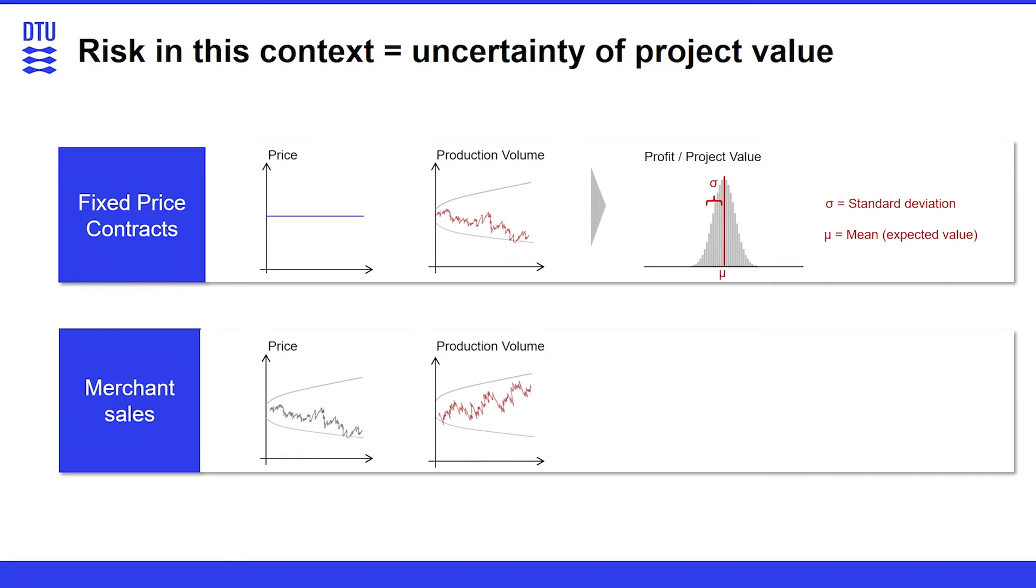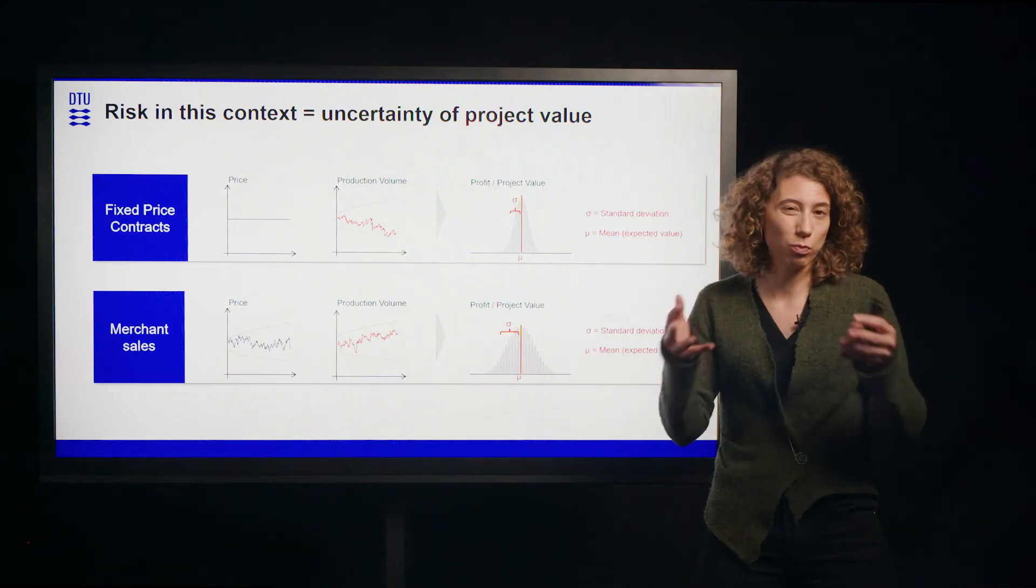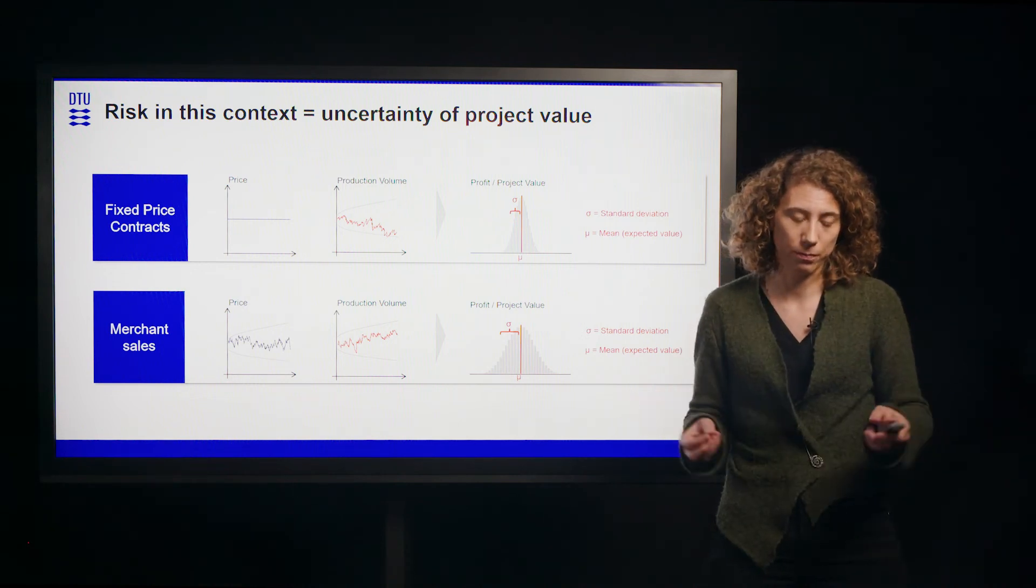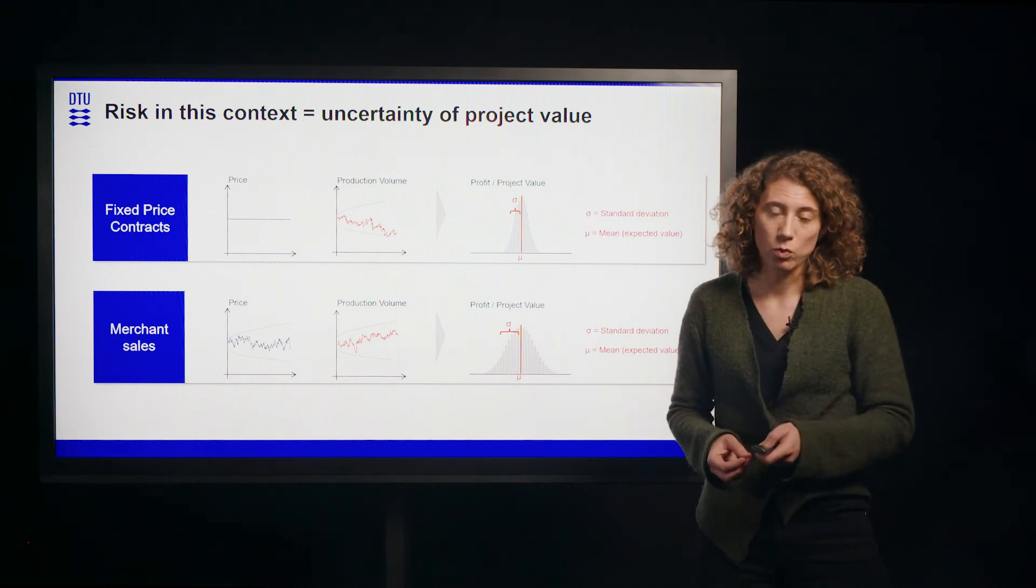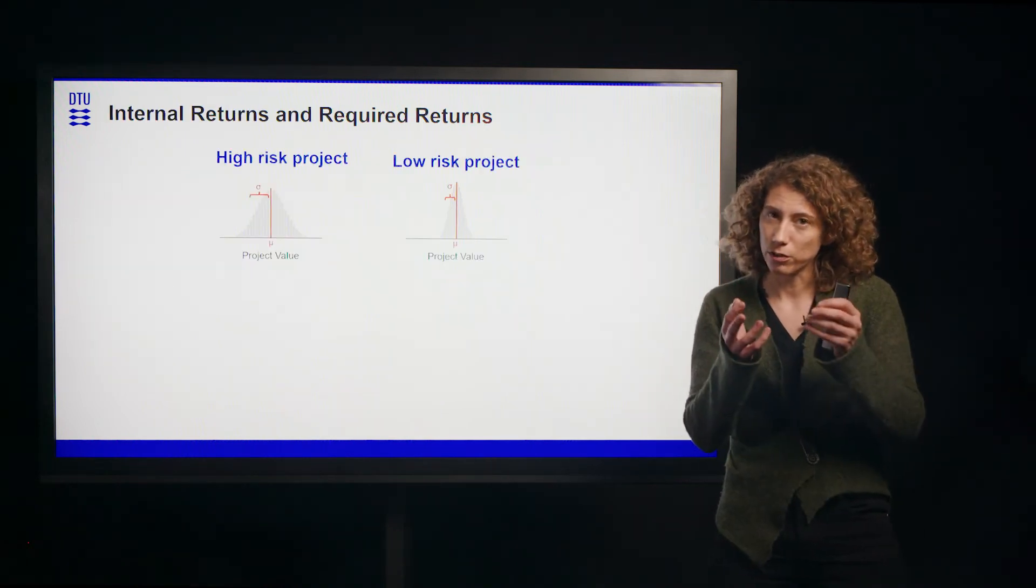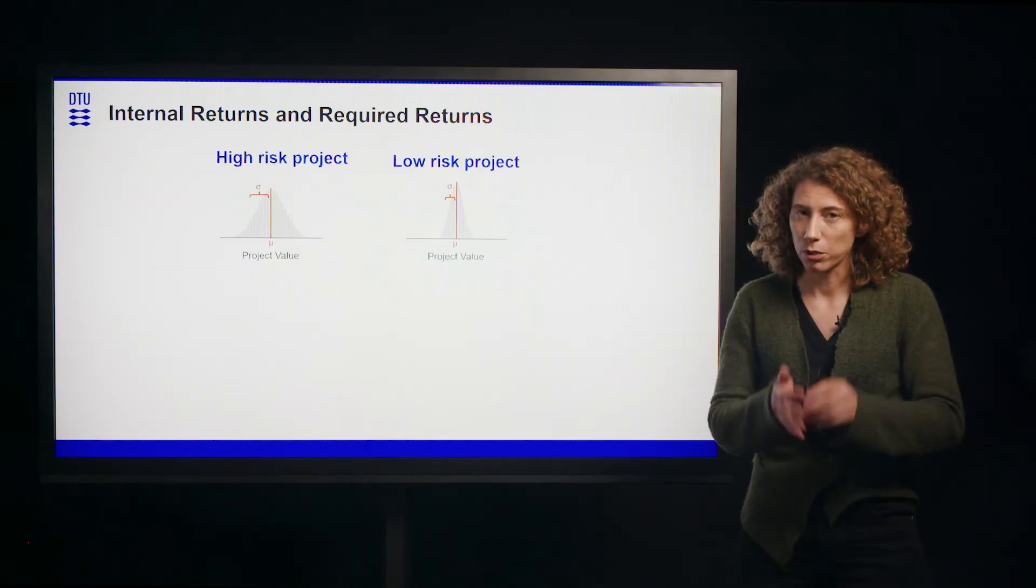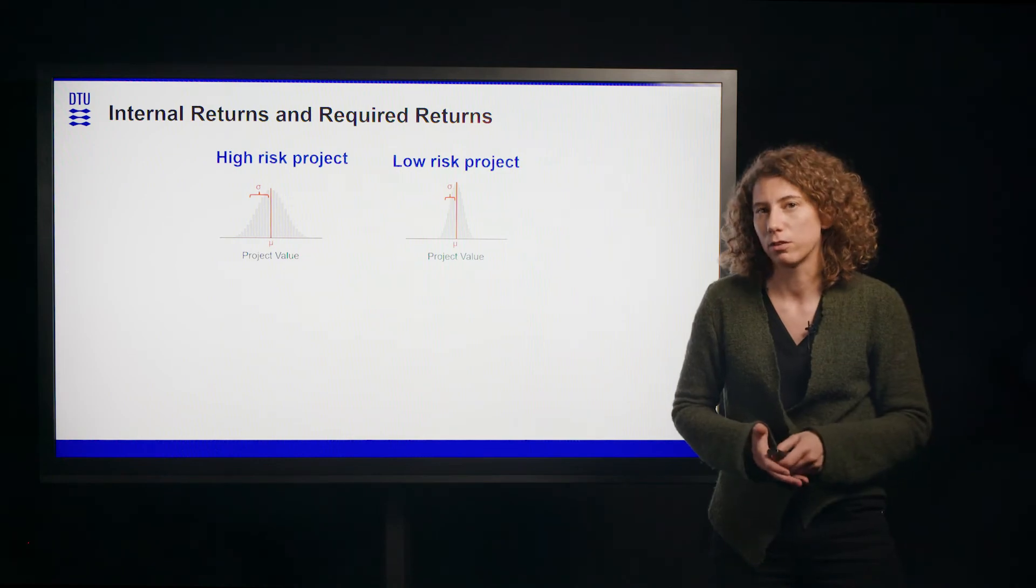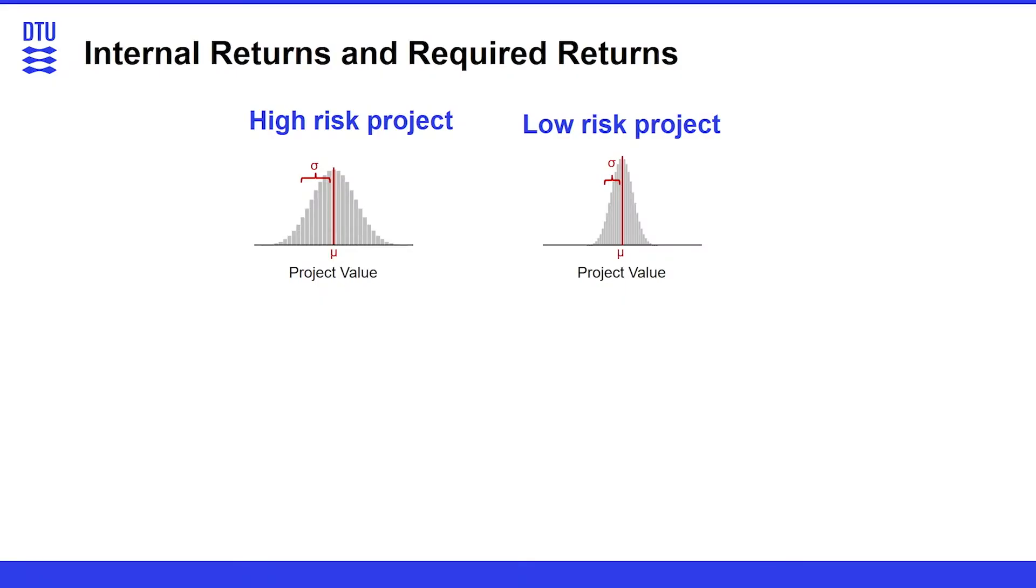In this example with merchant sales, again we assume we operate in a market where we are selling at a variable price at the market. You will see that both the price and the production volume are changing which can lead to the situation that our overall probability distribution is broader. The project is more uncertain. So let's keep these two projects in mind.